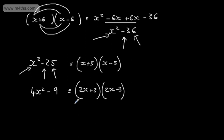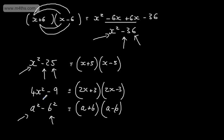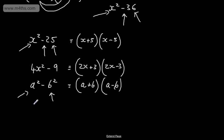If we looked at another one — let's say we had a squared minus b squared — this is a square number, this is a square number, and we have a difference, therefore we could write this as a plus b and a minus b. So if you are now spotting the difference of squares, we could factor this quadratic expression into the two brackets.